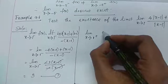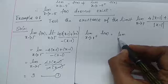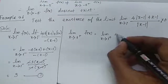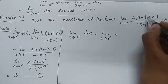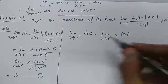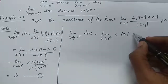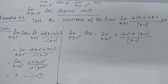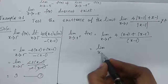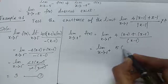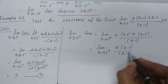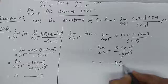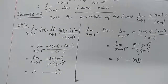Now the right limit: lim (x→1⁺) f(x). For x > 1, |x−1| = x−1. So f(x) = [4(x−1) + (x−1)] / (x−1) = 5(x−1)/(x−1). The (x−1) terms cancel, giving the value 5. This is equation number 2.